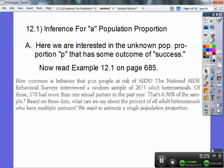How common is the behavior that puts people at risk of AIDS? The National AIDS Behavior Survey interviewed a random sample of 2,673 adult heterosexuals. Of these, 170 had more than one sexual partner in the past year. That's 6.36% of the sample. Based on these data, what can we say about the percentage of all heterosexuals who have multiple partners? So here we want to estimate a single population proportion.